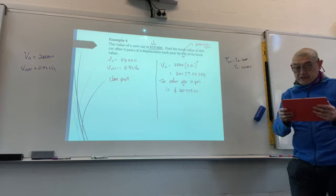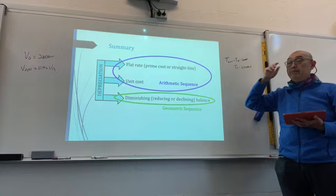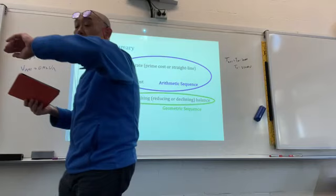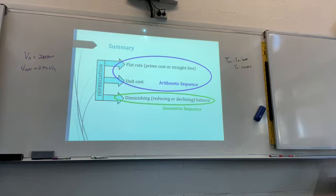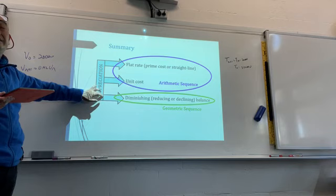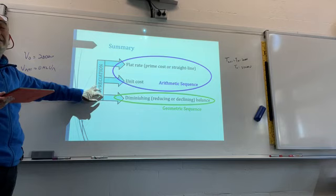Summary: flat rate and unit cost use arithmetic sequences; diminishing balance uses a geometric sequence. You have exercises to complete — make a start on flat rate, then unit cost, then diminishing. That's all for today's lesson on the three types of depreciation.